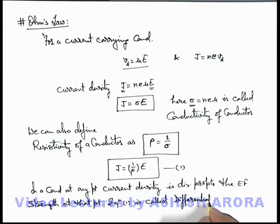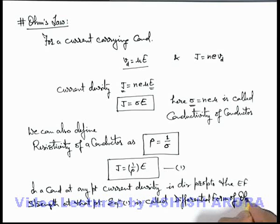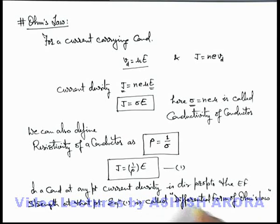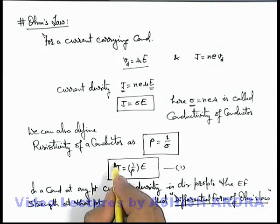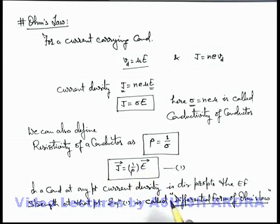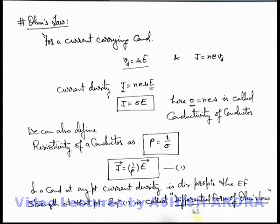Equation 1 is called the differential form of Ohm's Law. Always remember the differential form of Ohm's Law is the relation between current density and electric field. It can also be written as a vector relation, and its simplified form which you might have studied in previous classes will be derived from this relation for a given uniform conductor.